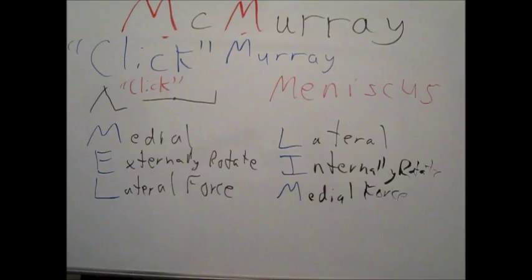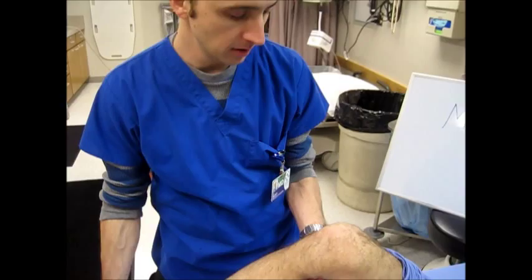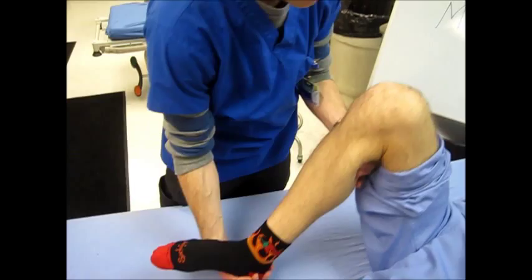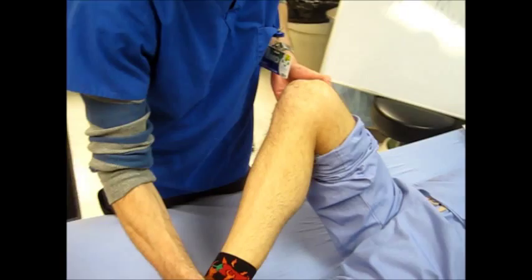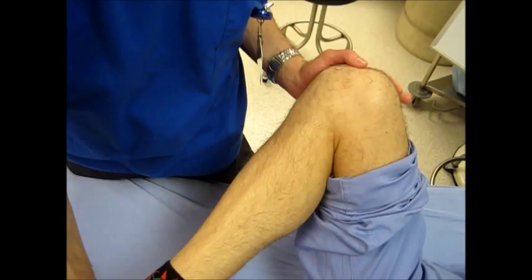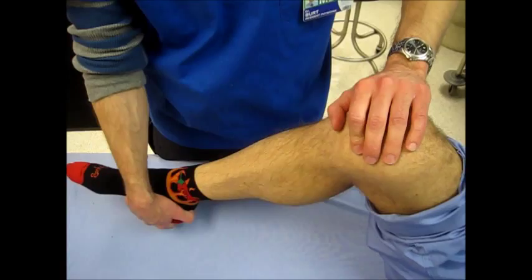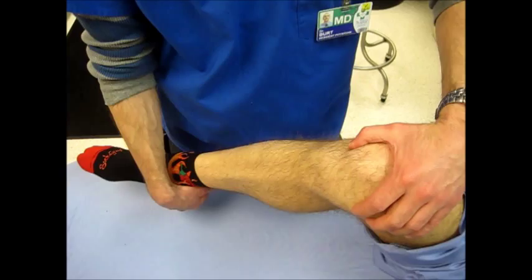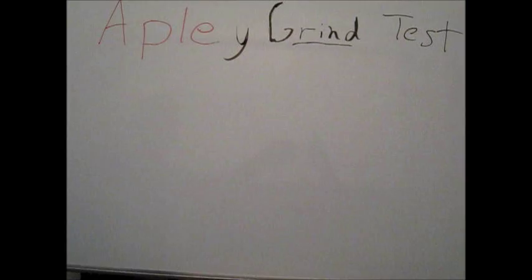Now we're going to do the McMurray test, which I call the Click Murray test, because that's one of the things you're assessing for, which checks for meniscal damage. Remember that the medial meniscus mnemonic is MEL. So for the medial meniscus, externally rotate and put a lateral valgus force. I'm assessing for any clicks or snaps, or patient pain, which I don't find here. For the lateral meniscus, the mnemonic is LIM, internally rotate and put a medial or varus force. Looking for patient pain as well as clicks, and I don't find any of that. So we have a very good McMurray with no signs of meniscal damage.